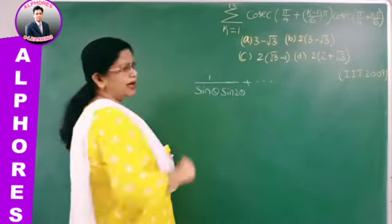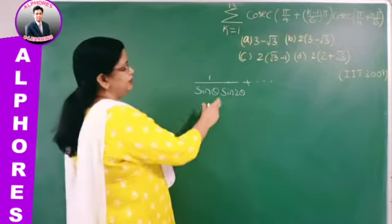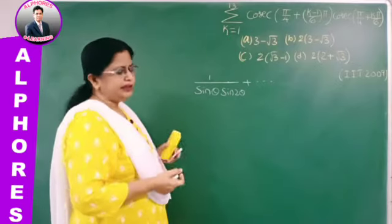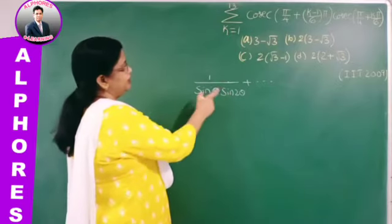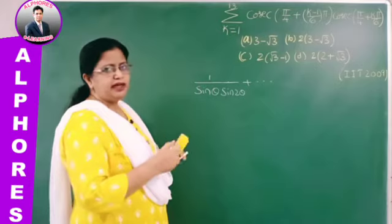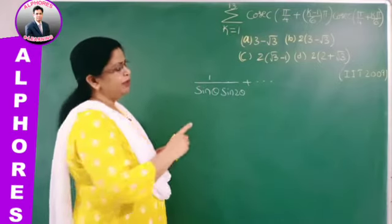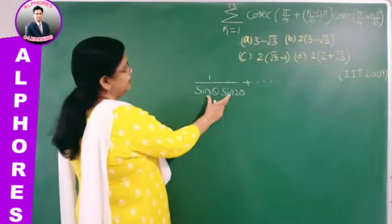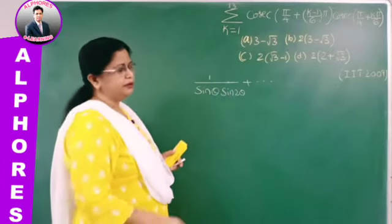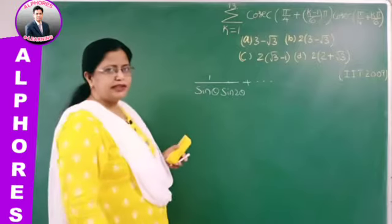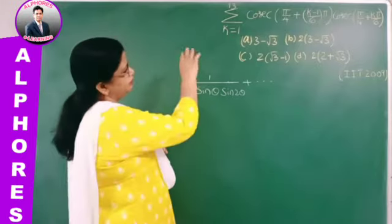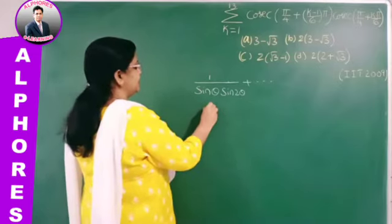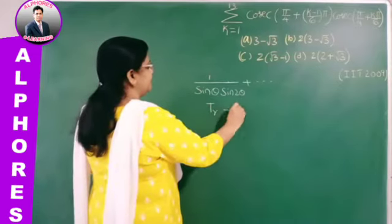We take the R-th term, simplify it as two fractions with a difference, then substitute R = 1, 2, 3, etc., to get the answer. The method of difference applies when terms are in the denominator. Even with a numerator, if consecutive terms appear as T_R minus T_{R-1} in a sigma, you substitute R values and the terms cancel telescopically.